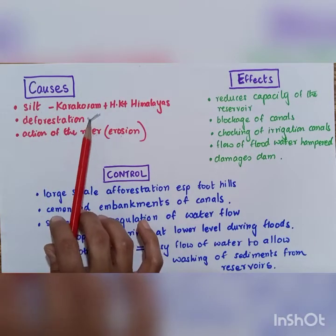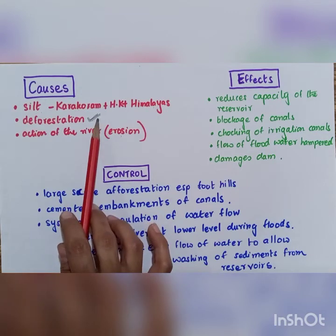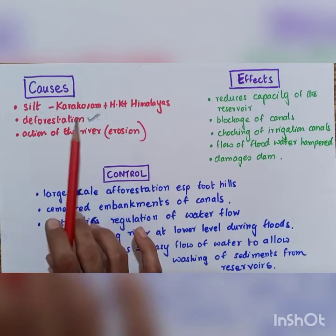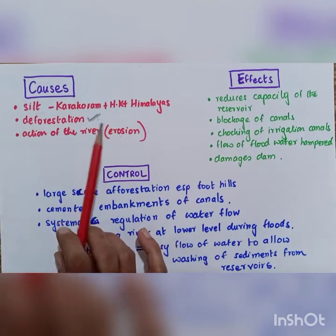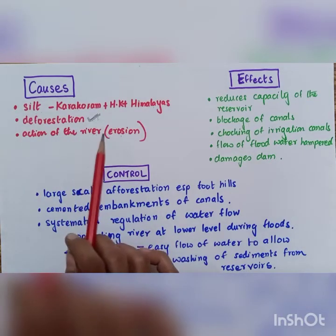Second reason is deforestation. This is a very important reason. Cutting down of trees actually weakens the structure of the land. It is the roots that hold the land intact. But if the roots are absent, the trees are cut down, then the land will not stay firm and the land will become susceptible to erosion.